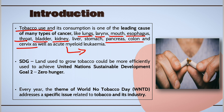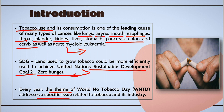Coming to the United Nations Sustainable Development Goals, tobacco is related with Goal Number 2, that is Zero Hunger. If we use the land to grow sustainable crops instead of tobacco, this will definitely contribute to reducing hunger from the world. Every year a theme is given to World No Tobacco Day which addresses a specific issue related with tobacco and its industry.